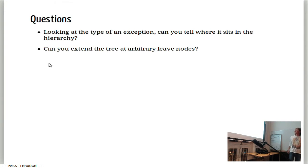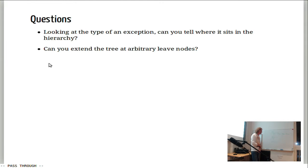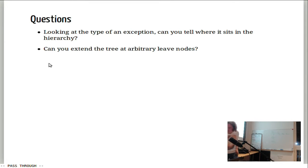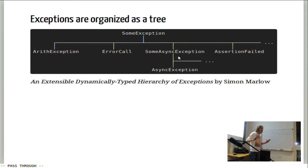Given this concept, if you look at the type of an exception, can we decide where it sits in this tree? The short answer is no. We could wrap arbitrarily. There is SomeAsyncException, introduced in base 4.7 — that's relatively new — to address some problems. You could wrap an ErrorCall in a SomeAsyncException, but you should not. It's dynamically typed, and on a type level there's no clue how this tree looks.